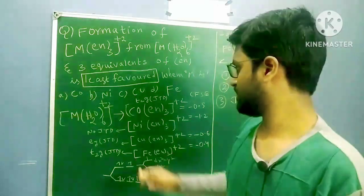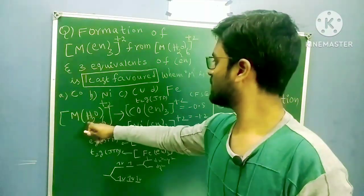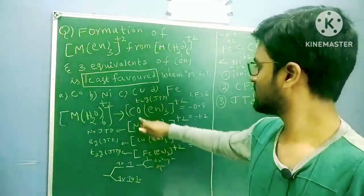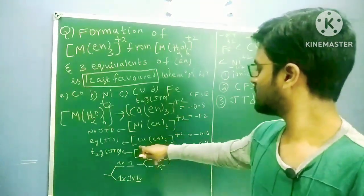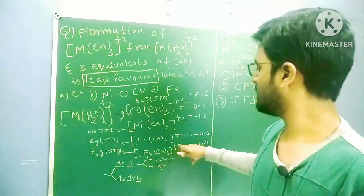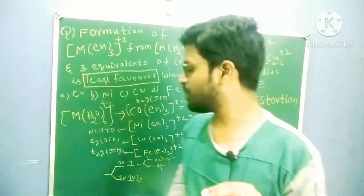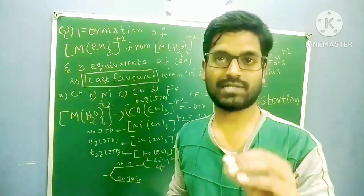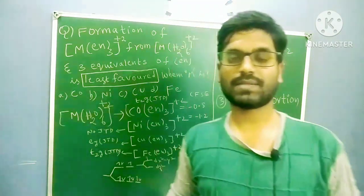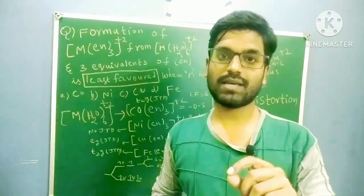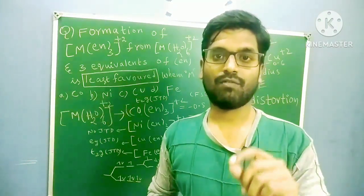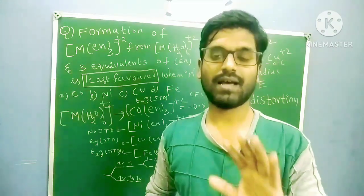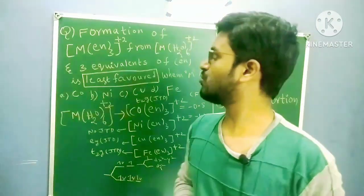If you see [M(H₂O)₆]²⁺ as the reactant, four products are forming: [Co(en)₃]²⁺, [Ni(en)₃]²⁺, [Cu(en)₃]²⁺, and [Fe(en)₃]²⁺. You have to pick which complex is least stable. Your doubt is: according to the Irving-Williams series, why is the answer not Fe²⁺? I will explain.